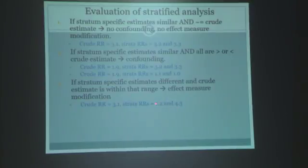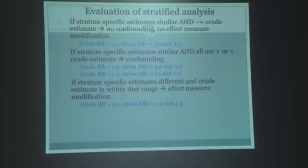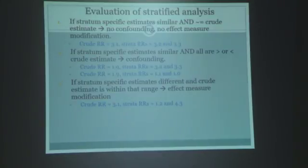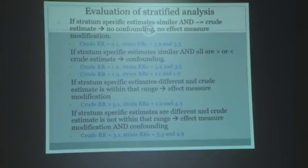Once you see that the two strata are different, there is heterogeneity and therefore effect measure modification. Once the two strata are almost similar, there is homogeneity—but that alone is not enough to determine confounding. You then compare those similar stratum-specific estimates to the crude to determine whether or not there is confounding. Using these estimates, we can determine the presence or absence of confounding or effect modification.